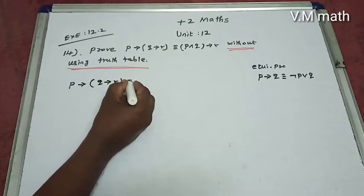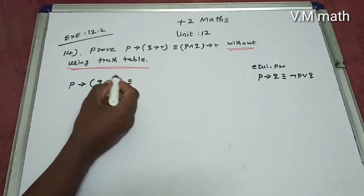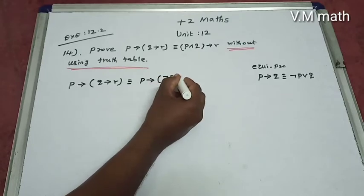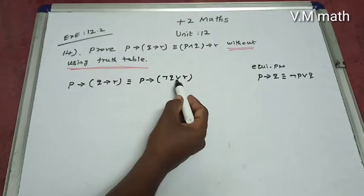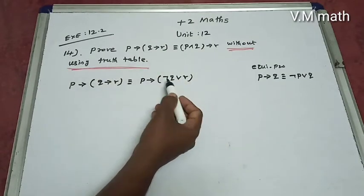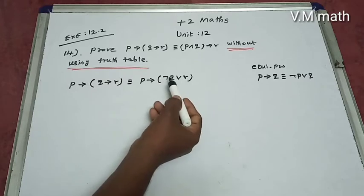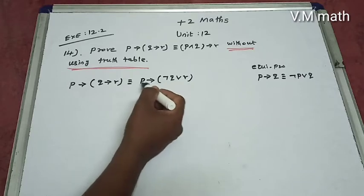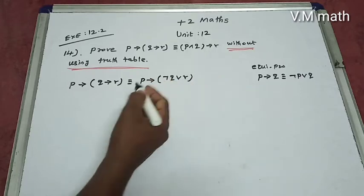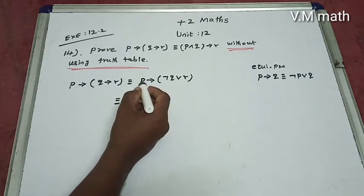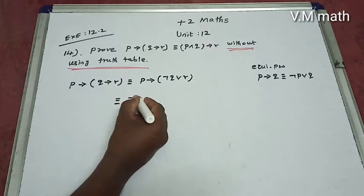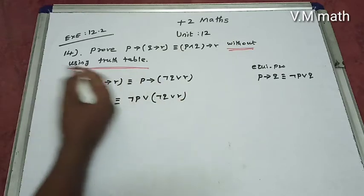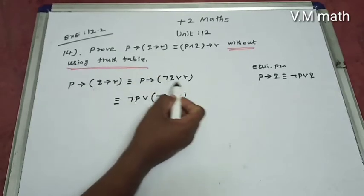Left hand side: p gives q gives r is identical to p gives negation of q or r. This is an implication statement, so we apply the equivalence property. Using the equivalence property again, this becomes: negative p or negative q or r.